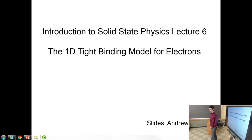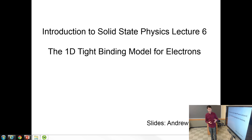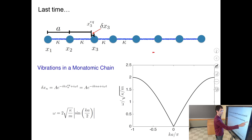Alright, lecture six, and we are going to discuss another one-dimensional toy model of solid-state, this time having to do with electrons. Conduction, or even some more advanced properties like why some materials are electrical insulators and why some are conductors, can already be seen in this very simple model. It's called the tight binding model.